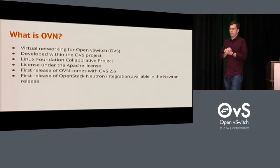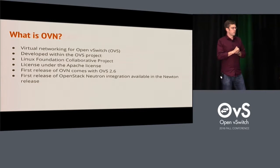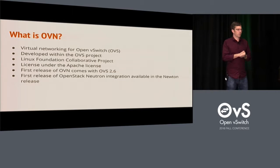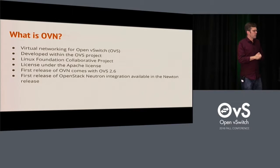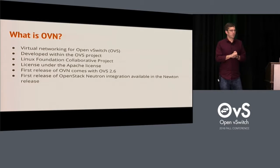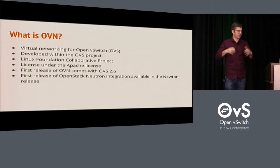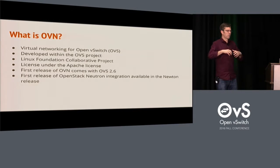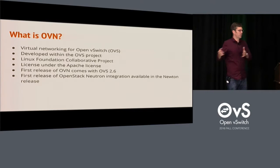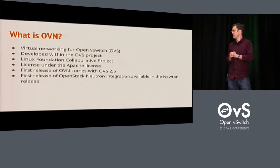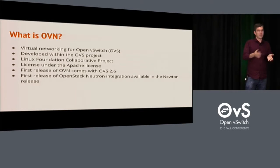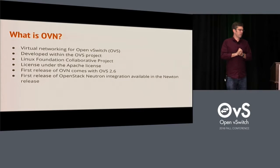There will be quite a few talks on OVN today. OVN is a project where we bring virtual networking to OVS. Open vSwitch has always been a project where you could build things — it didn't actually provide a distributed virtual switch or virtual networking. It provided the components so that you could build that, and then you needed a controller to create that sort of thing. With OVN, we're providing that ability as part of the Open vSwitch project.